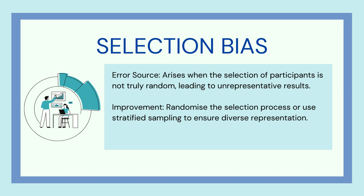There is another kind of bias called selection bias. This normally arises when the selection of participants is not truly random, leading to unrepresentative results. Improvements include randomizing the selection process or using stratified sampling to ensure diverse representation in the selection.